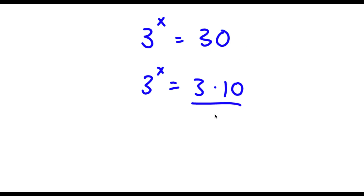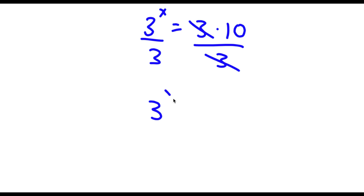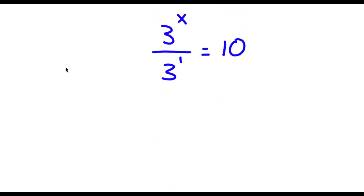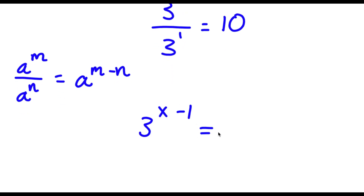Now I'm going to go ahead and divide both sides by 3. These two cancel out and now I am left with 3 to the power of x over 3 to the power of 1, because anything to the power of 1 is the same thing as itself, is equal to 10. Now if I have something in the form a to the power of m over a to the power of n, this is going to equal a to the power of m minus n. So in this case we have 3 to the power of x over 3 to the power of 1, which equals 3 to the power of x minus 1 is equal to 10.